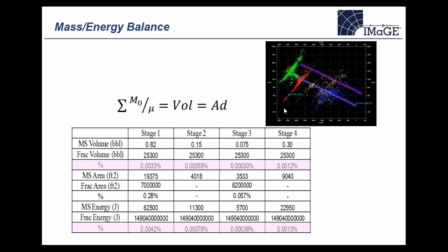Looking at a Barnett Shale example — an arbitrary four-stage frac — we've taken all the microseismic events, each of which has a seismic moment used for the moment magnitude. Adding all that seismic moment together and dividing by the shear modulus gives us, based on the definition of seismic moment, the total area times displacement of the rock movement causing all the microseismic sources. We can add that together and look at a total volume associated with all those microseismic data combined.